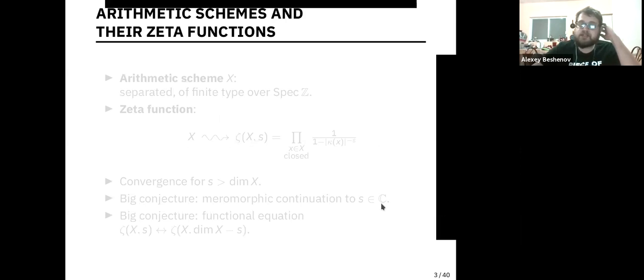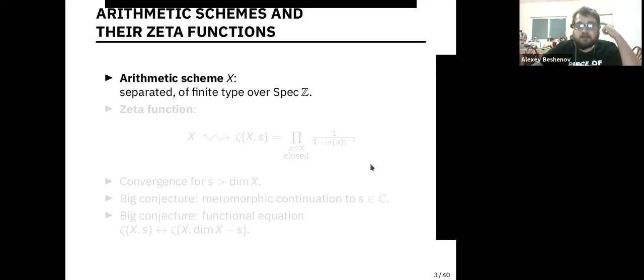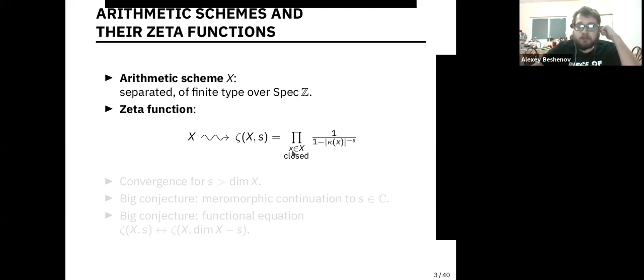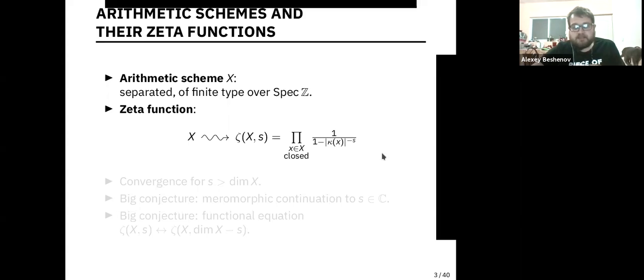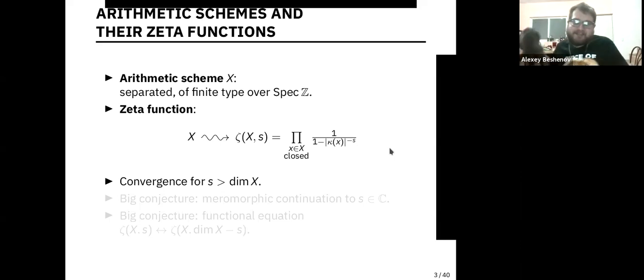Beginning with the motivation behind all this: by an arithmetic scheme, we will mean a separated scheme of finite type over Spec Z. The zeta function will be defined using this Euler product over the closed points of the scheme. Since we assume that the scheme is of finite type, these residue fields κ(x) will all be finite, so this makes sense. It is easy to show that this Euler product converges whenever S is bigger than the dimension of our scheme.